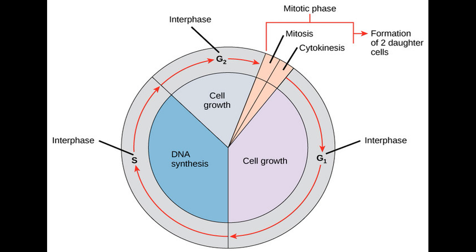Interphase occupies about 90% of a eukaryotic cell's life and is when the cell's normal processes occur, such as obtaining nutrients, growth, and making proteins, among other things. Interphase is split up into three portions: G1, S, and G2. G1 stands for GAP1 and is the period in which the cell primarily grows and synthesizes proteins. S stands for synthesis and is when the cell replicates its DNA, the relevant segment for this video. G2 stands for GAP2 and is when the cell prepares for mitosis or meiosis, which we'll return to in a later video.